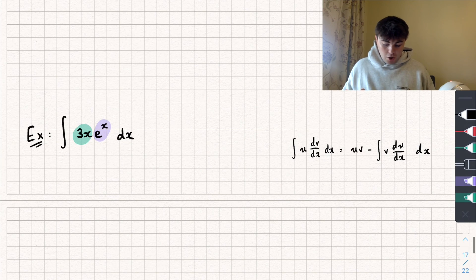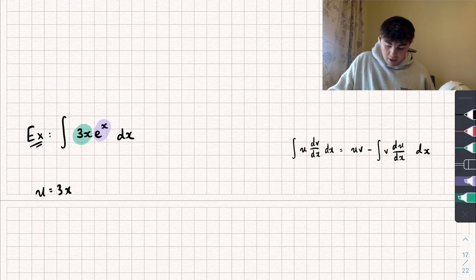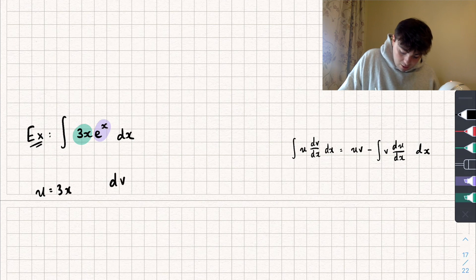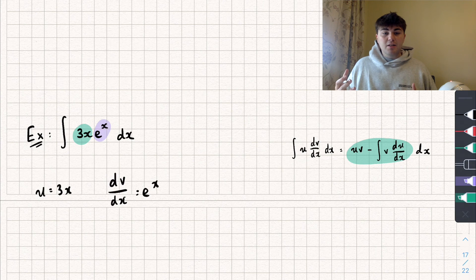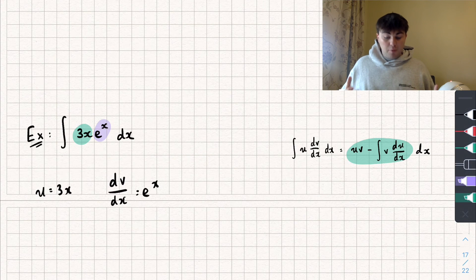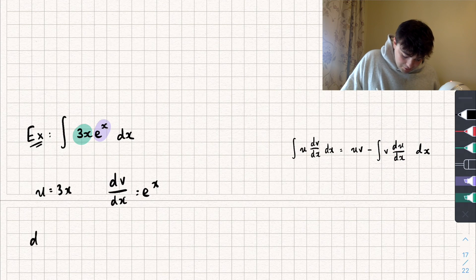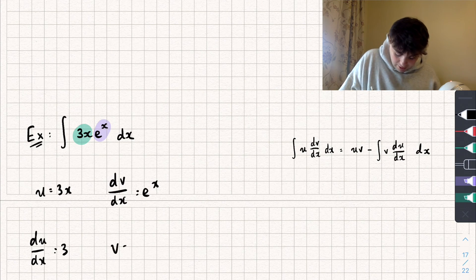Here's how I would set it out. I'm going to set u equal to 3x, which means the other part — my dv/dx — is going to be e to the x. So I write dv/dx equal to e to the x. Now if we look at the other side of integration by parts, I want to know what v is, which means I'm going to have to integrate dv/dx. I also want to know the derivative of u. So: the derivative of u gives du/dx equal to 3, and integrating dv/dx — integrating e to the x — gives me e to the x, which equals v.